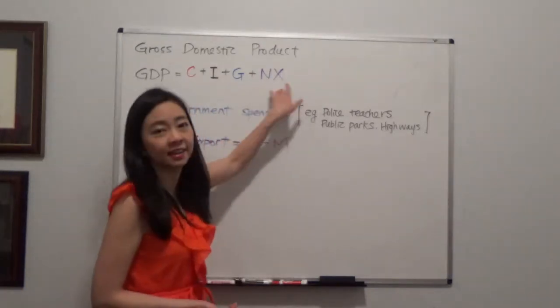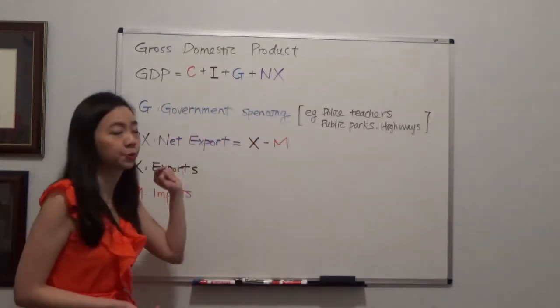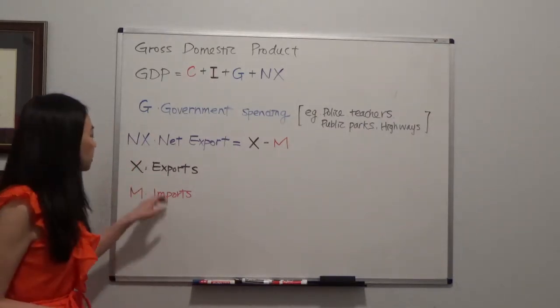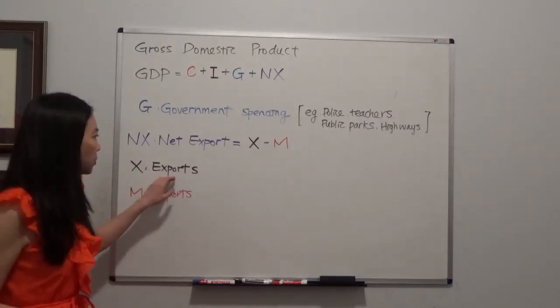And the next item is NX, that is net export, which is equal to export minus imports. So why do we have to include exports?